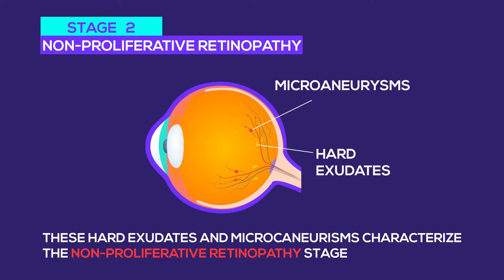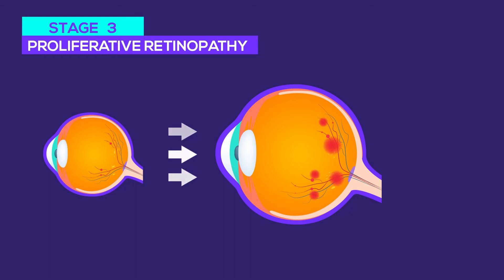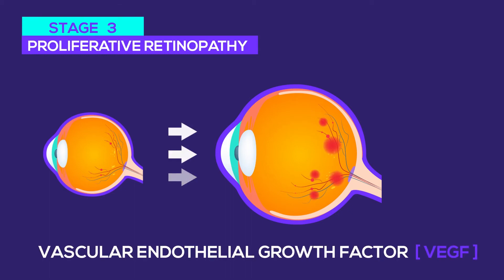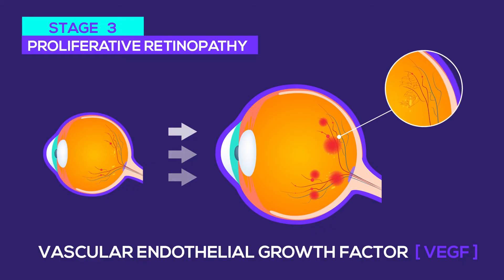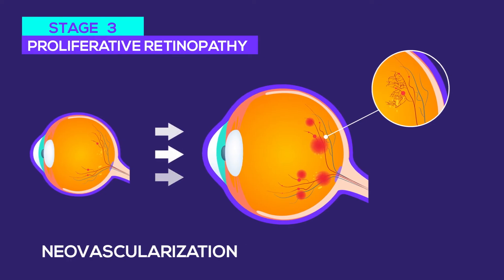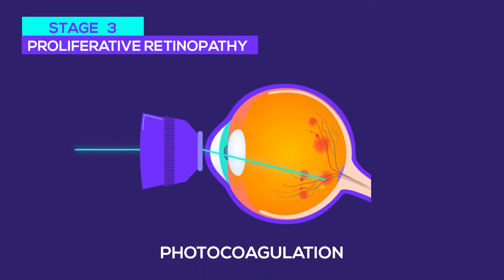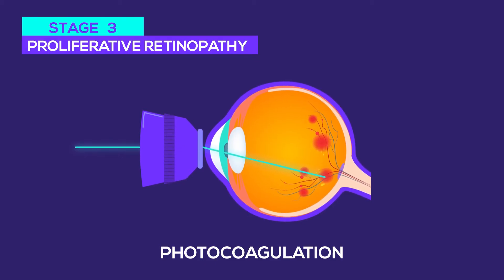Microaneurysms are considered the first sign in diabetic retinopathy. The third stage is called proliferative retinopathy. Due to vessel damage, the retina is deprived of oxygen. Therefore, it secretes a chemical called VEGF, or vascular endothelial growth factors, that stimulate new vessel formation. This new vessel formation is called neovascularization. But these new vessels are very fragile and can suddenly rupture and cause vitreous hemorrhages and retinal detachments. Therefore, proliferative retinopathy is treated aggressively with a technique called photocoagulation, where laser rays are directed at retinal vessels to stop new vessel formation and to seal the leaking vessels.